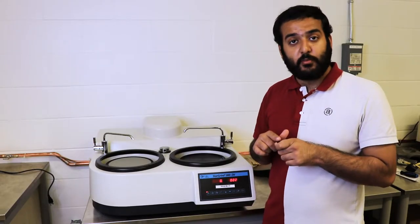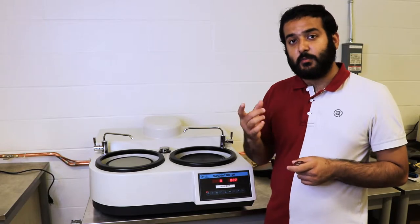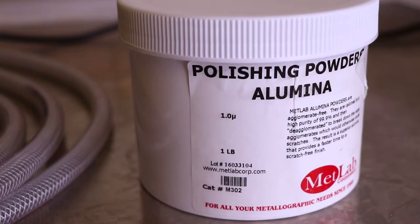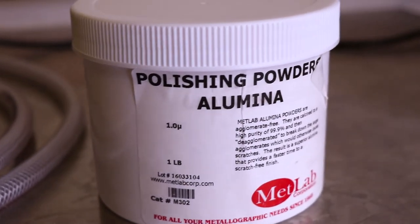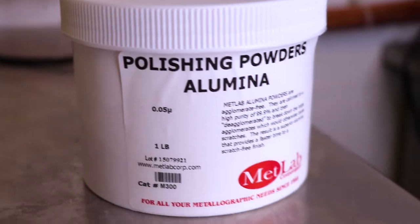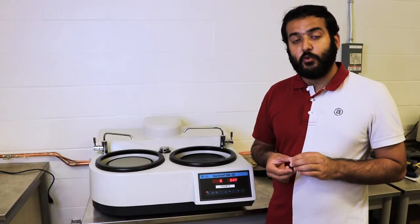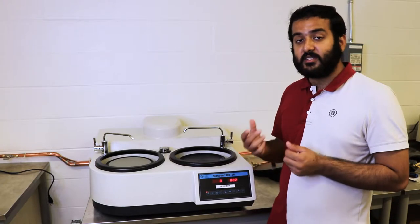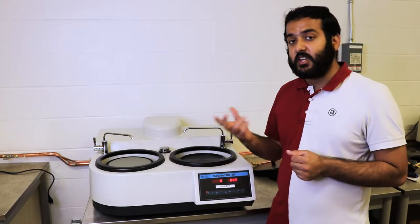This powder that we're going to be using is called alumina, and it comes in two different sizes: one micrometer and 0.5 micrometers. We're going to start with one micrometer and move on to 0.5. The way to apply the polishing pad is the same as it is for the sandpaper. There's a ring around the rotating plate that you want to remove and add the pad onto.